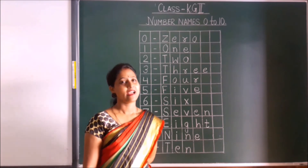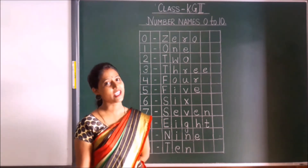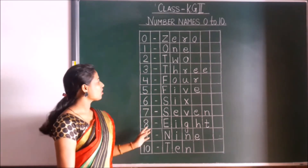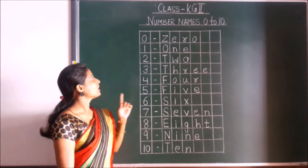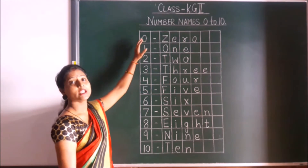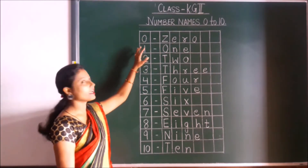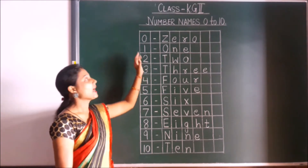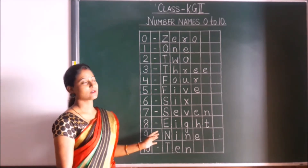I hope you have revised your number names from 0 to 10. Now children, I will show you how to write in your copy. In this way you have to write in your copy. One thing you have to remember: when you write in your copy, you have to write 0, then leave 1 box, then write 1, then leave 1 box, then write 2, then leave 1 box.